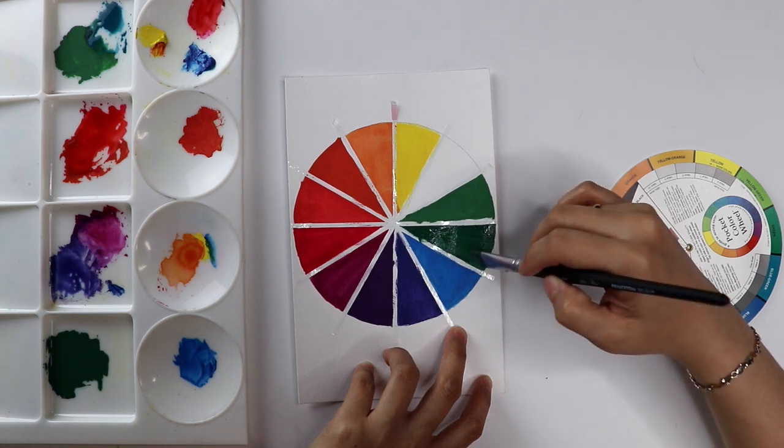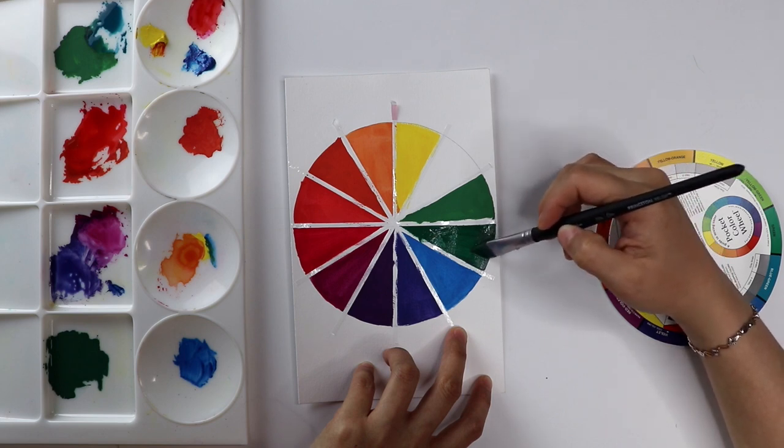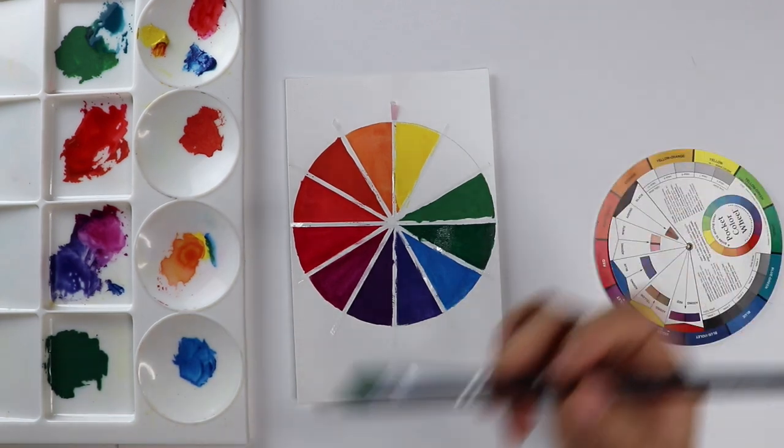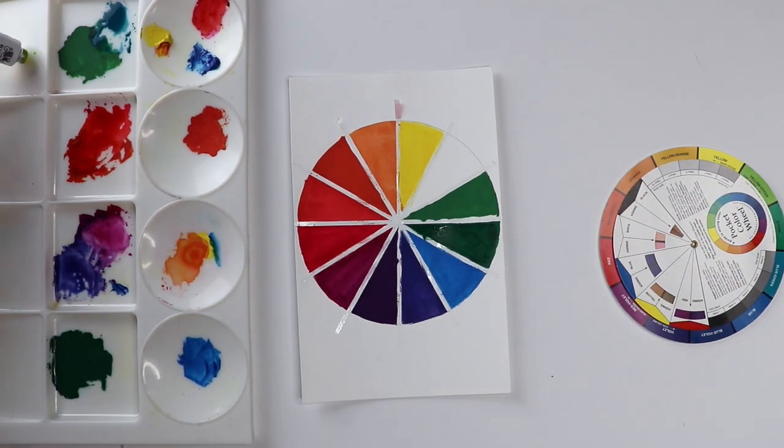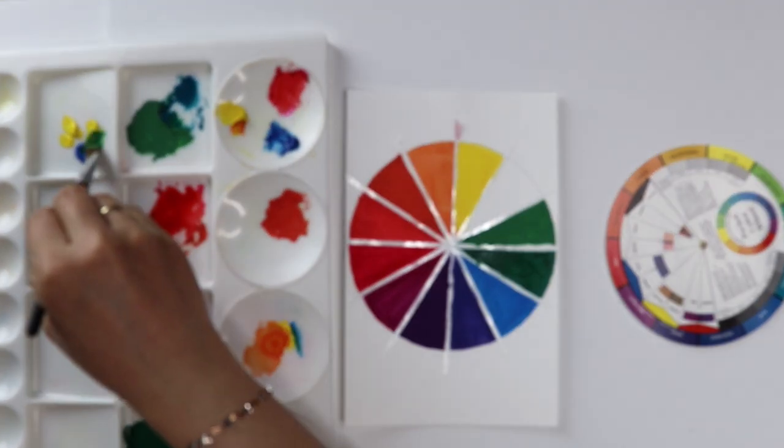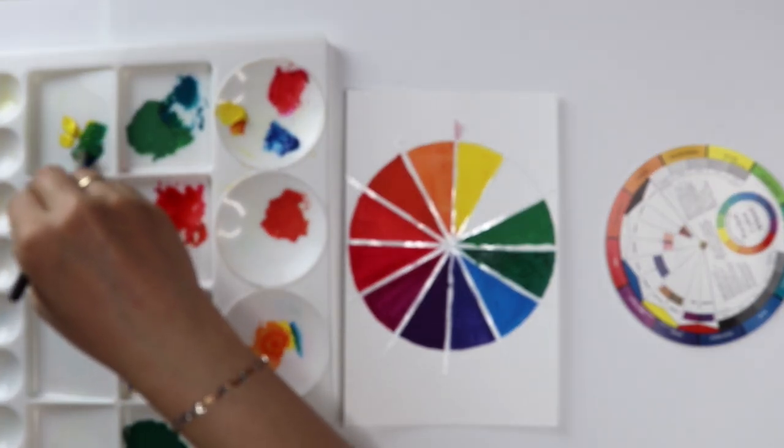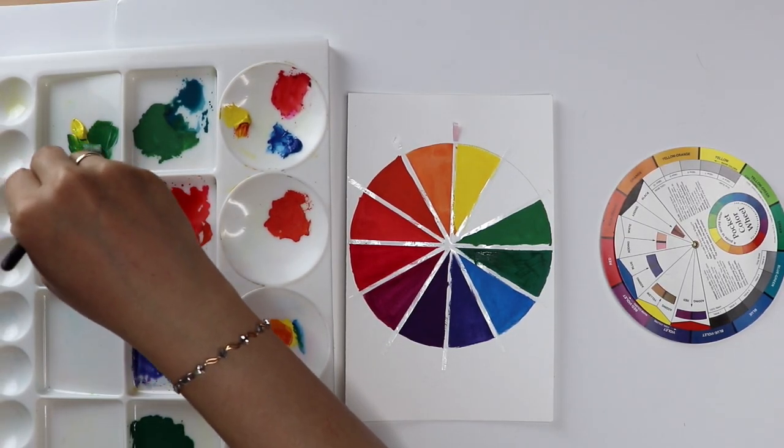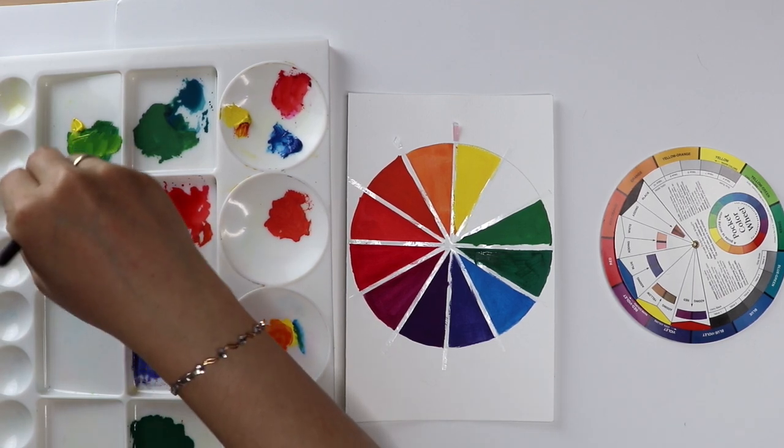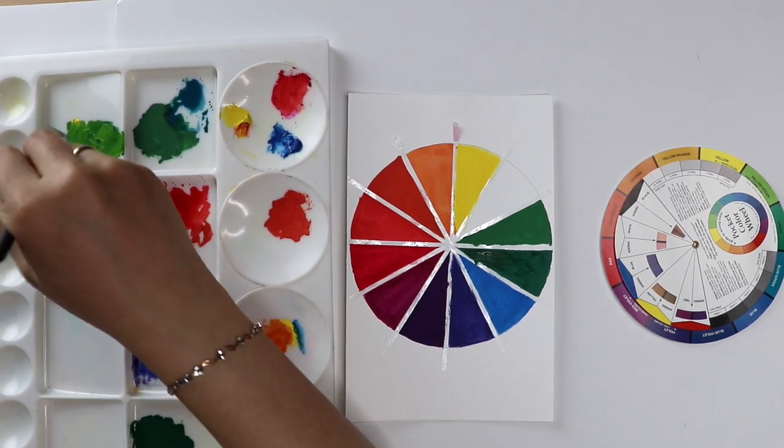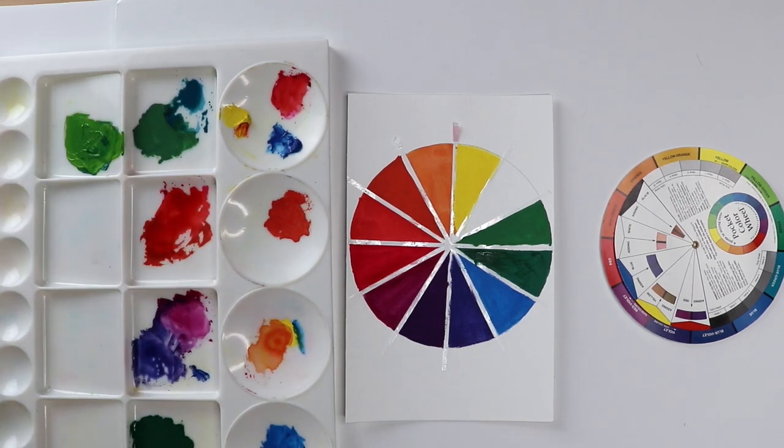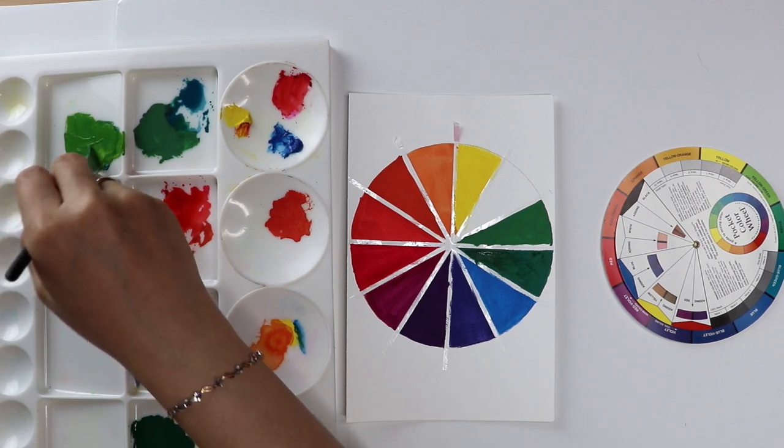The color wheel also comes in handy when analyzing other people's work. If you see a very beautiful, stunning painting and want to understand how the color scheme was developed, the first thing you want to do is take out the color wheel and try to locate all the colors that have been used. By doing more of this type of exercise, gradually you will develop a very good sense of using colors and eventually have your own style.